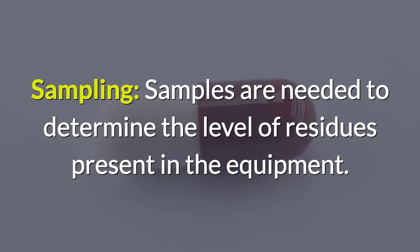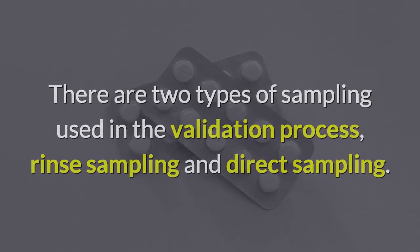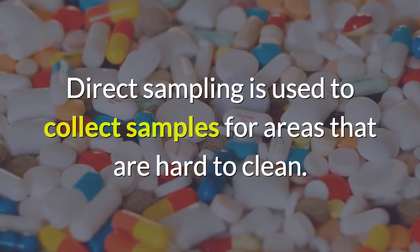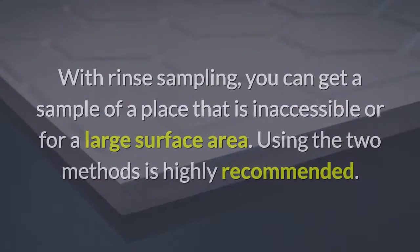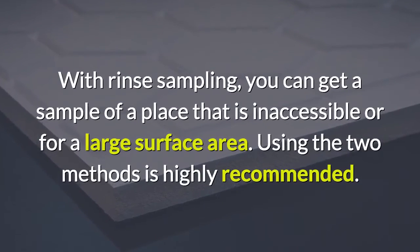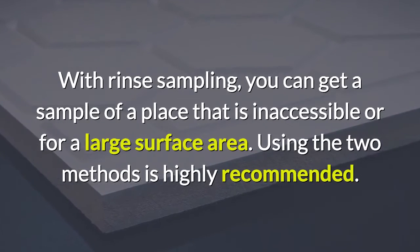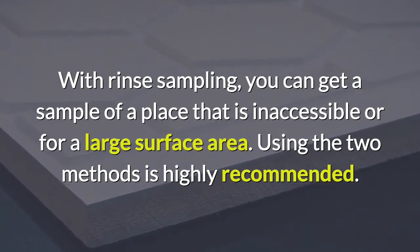Samples are needed to determine the level of residues present in the equipment. There are two types of sampling used in the validation process: rinse sampling and direct sampling. Direct sampling is used to collect samples from areas that are hard to clean, while rinse sampling can obtain a sample from an inaccessible place or a large surface area. Using both methods is highly recommended.